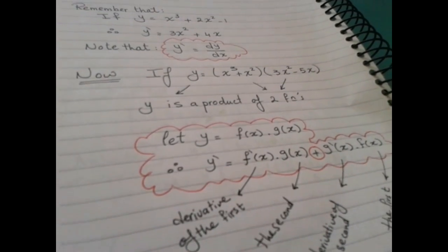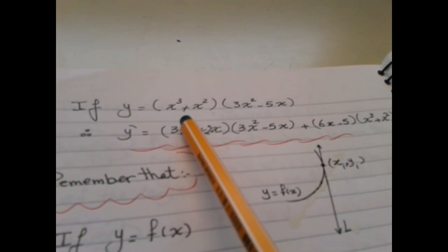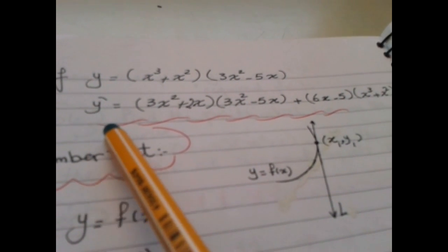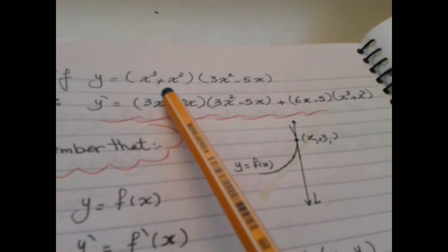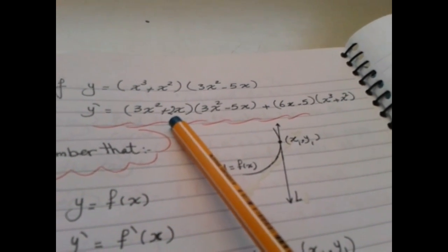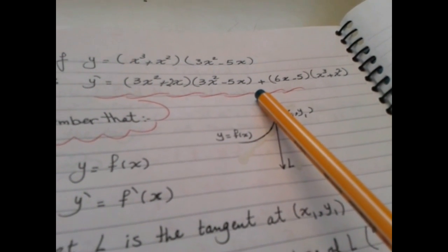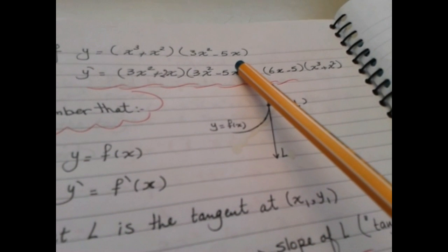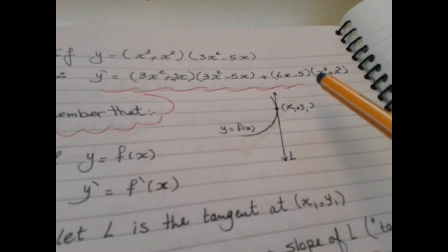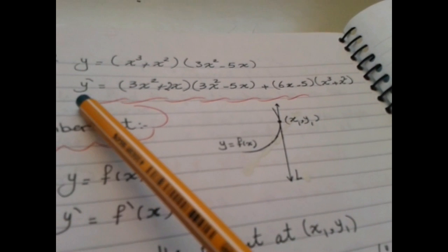Let's see the first example. y = (x³ + x²)(3x² - 5x). Find y'. The derivative of the first function (x³ + x²) is 3x² + 2x, times the second (3x² - 5x) without any changing. Plus the derivative of the second (3x² - 5x), which is 6x - 5, times the first function (x³ + x²) without any changing. This gives us y'.